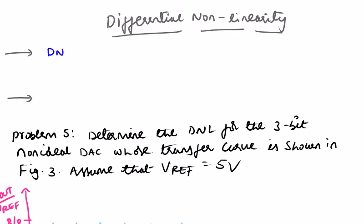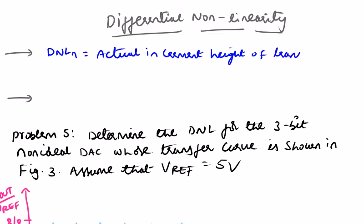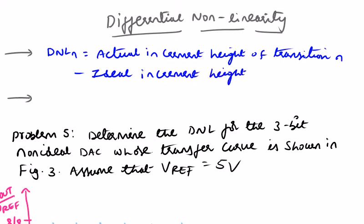The formula is: DNL(N) equals the actual increment height of transition N minus the ideal increment height. For an N-bit DAC to be accurate, the DNL should be less than or equal to half LSB.